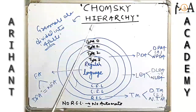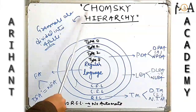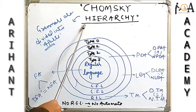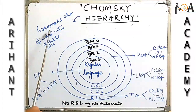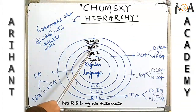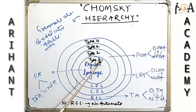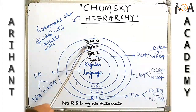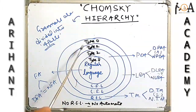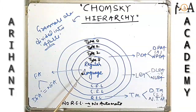Hello students. In this video we will discuss Chomsky's Hierarchy. Basically, Chomsky's Hierarchy states that grammar is divided into four parts: Type 0, Type 1, Type 2, and Type 3 grammar. We will discuss each of these in detail, so watch the video until the end.